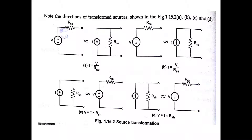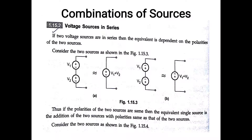Regarding direction: in the voltage source, current flows from plus to minus (downward). When converting to a current source, just change the direction — if the voltage source has current going upward (plus to minus), the current source current is upward; if downward, the current source current is downward. The current in parallel with RSH gives V equal to I multiplied by RSH, because RSH is the shunt field resistance.